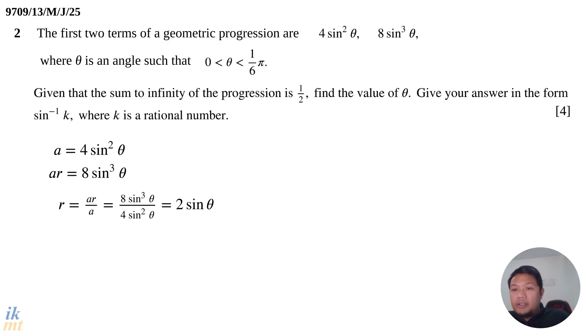Now that we have r, and we know the sum to infinity is a finite number, we can use the formula for sum to infinity of a geometric progression: S∞ = a/(1-r). We substitute a = 4 sin²θ and r = 2 sin θ, and set this equal to 1/2. Now we have an equation in sin θ. Let's do a cross multiplication to get rid of the fractions: 8 sin²θ = 1 - 2 sin θ.